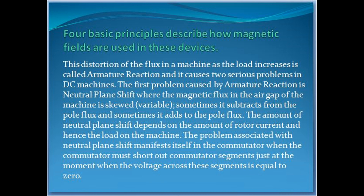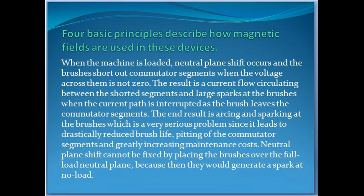This distortion of the flux in a machine as the load increases is called armature reaction, and it causes two serious problems in DC machines. The first problem is neutral plane shift, where the magnetic flux in the air gap of the machine is skewed — variable — sometimes subtracting from the pole flux and sometimes adding to it. The amount of neutral plane shift depends on the amount of rotor current and hence the load on the machine. The problem associated with neutral plane shift manifests itself in the commutator when the commutator must short out commutator segments just at the moment when the voltage across these segments is equal to zero. When the machine is loaded, neutral plane shift occurs and the brushes short out commutator segments when the voltage across them is not zero. The result is a current flow circulating between the shorted segments and large sparks at the brushes when the current path is interrupted as the brush leaves the commutator segments, leading to arcing and sparking at the brushes — a very serious problem since it leads to drastically reduced brush life and pitting of the commutator segments, greatly increasing maintenance costs.